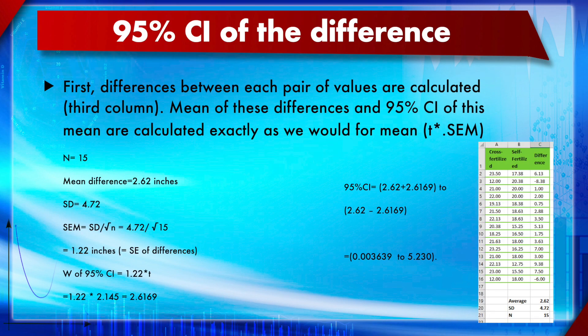First, we calculate the 95% confidence interval of the difference. Before doing any t-test, we calculate the standard error of the differences. With the standard error of the difference, it is just one more step to calculate the 95% CI. You multiply the standard error by t*, a constant from the t-distribution based on the degrees of freedom, which can be looked up in the t-table.